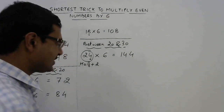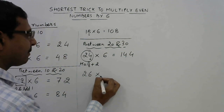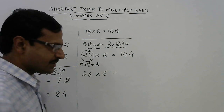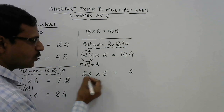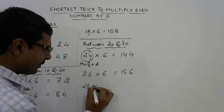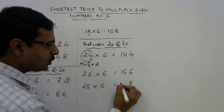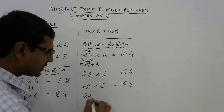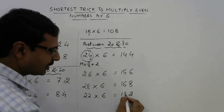Let's do two or three more examples in the 20s. 26 into 6: 6, then 13 plus 2 = 15. So 156. 28 into 6: 8, then 14 plus 2 = 16. So 168. 22 into 6: 2, then 11 plus 2 = 13. So 132. You can see how quickly we can get the answers.